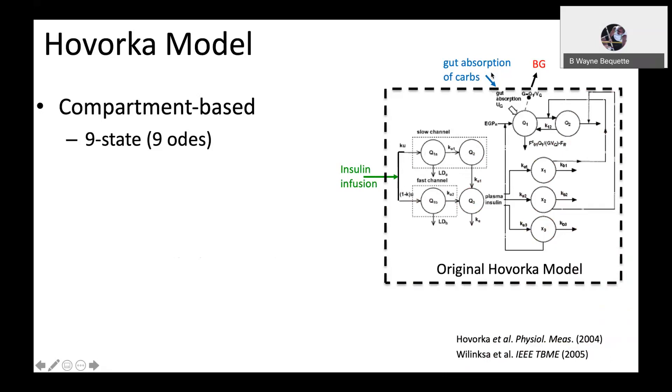We also see the gut absorption of carbohydrates from a meal coming in, so there are two compartments associated with blood glucose, and then there are three compartments associated with insulin action. After the insulin goes through these compartments, there is an effect of the insulin on the blood glucose uptake and therefore the concentration. The original model has nine compartments or nine states, therefore nine ordinary differential equations.